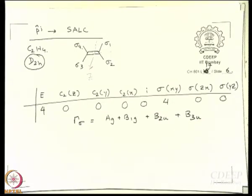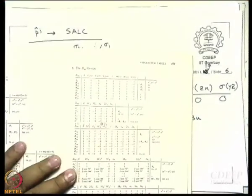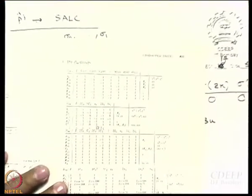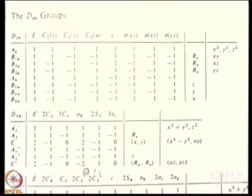You have to just believe me on that or you have to work it out. Let us see the character table. We have only talked about B1 and B2 so far. But if you have more than 2 B's, you have to give preference to something else also. What is this? D2H.